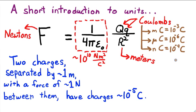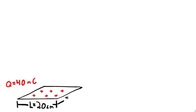Okay, enough about units. Let's go to our first problem. Here we have a thin, flat, square piece of aluminum foil. It carries a charge of 40 nanocoulombs, uniformly distributed, and it measures 20 centimeters on a side.